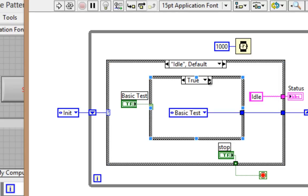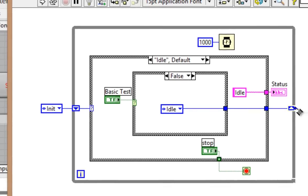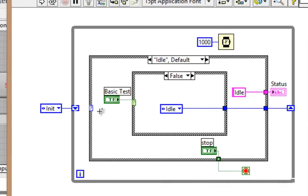Now if the user in the idle state does not click on the basic test button, then we stay in the idle state. Idle goes out to the right shift register, iterate, comes out the left, we stay here and check again.